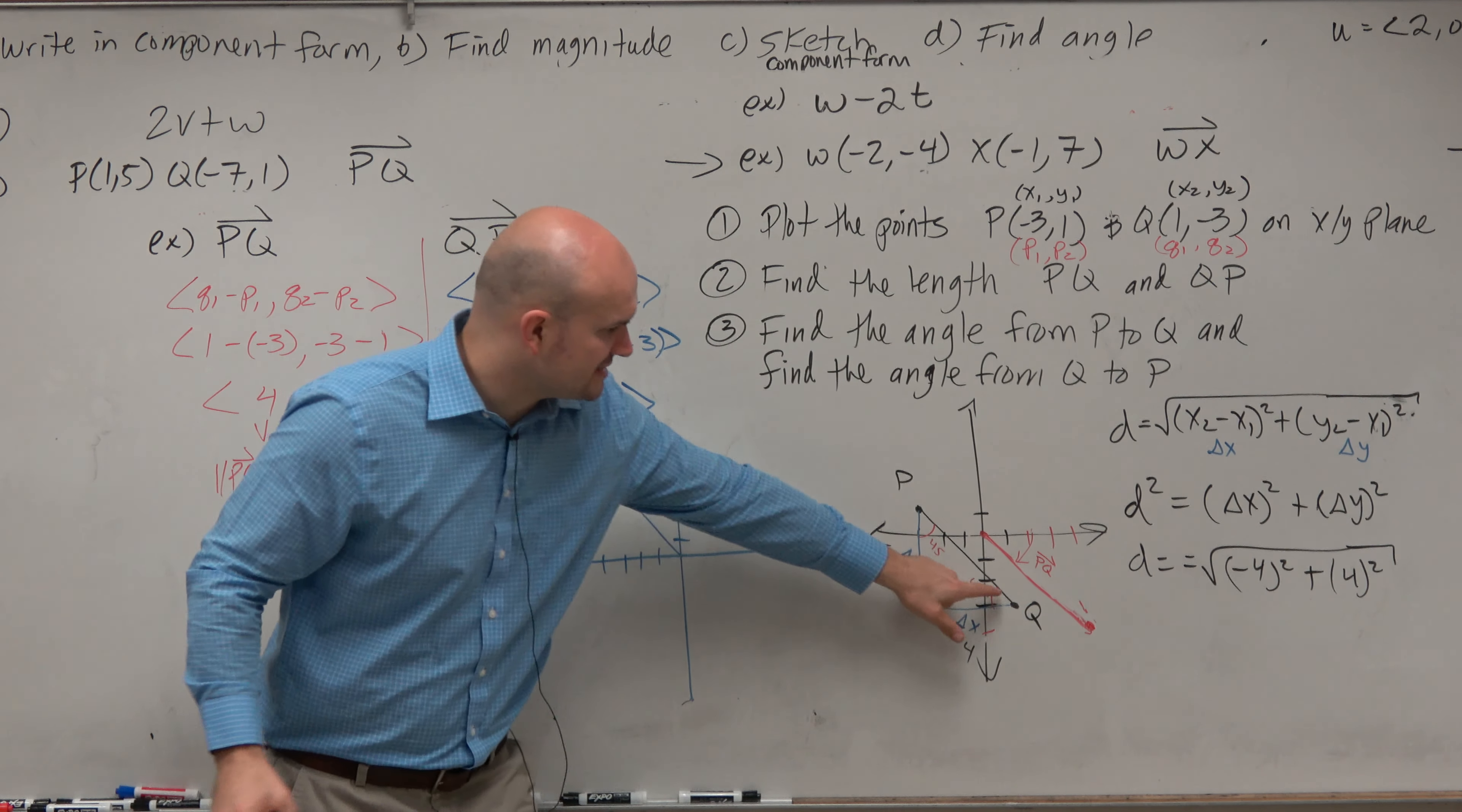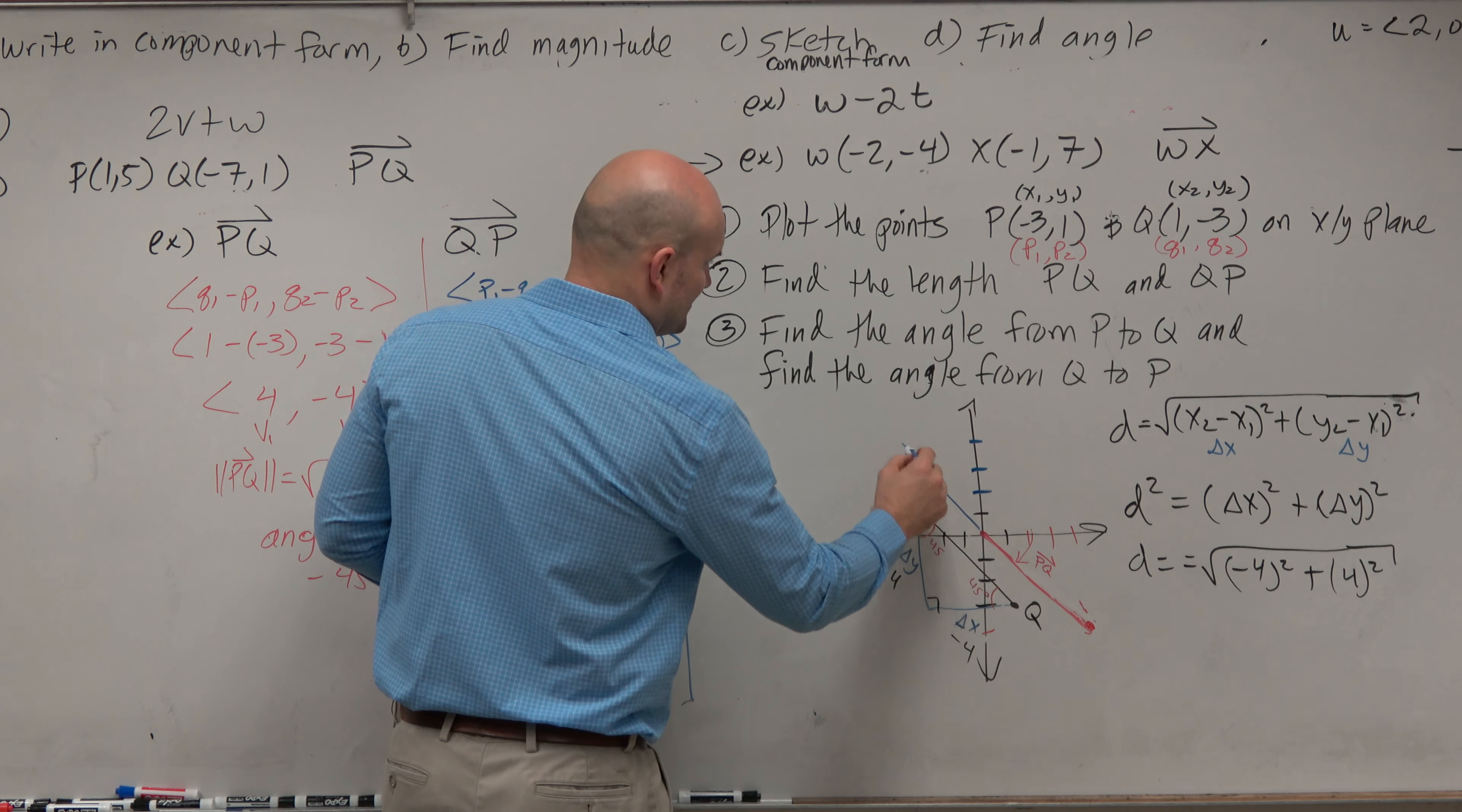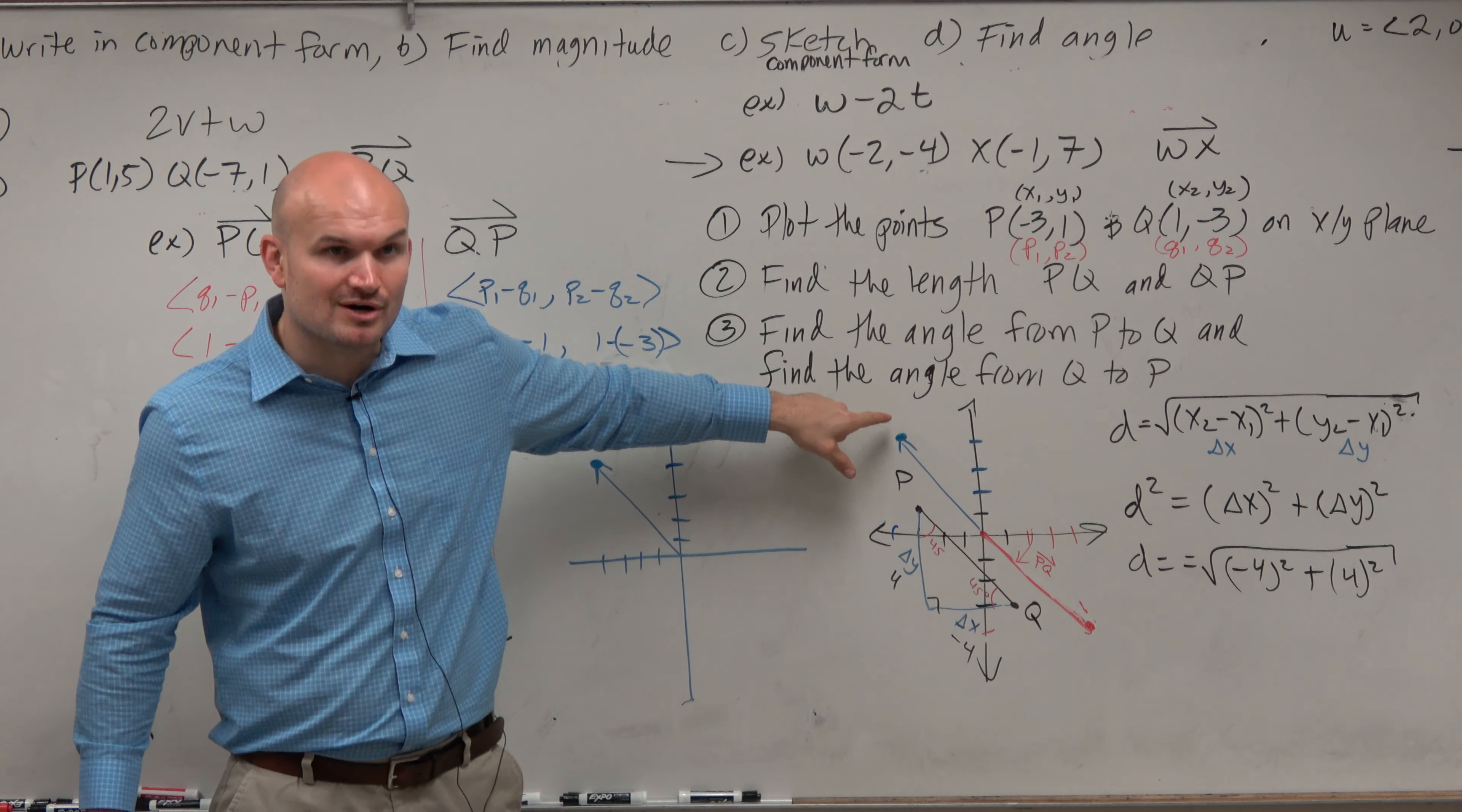Now, do you guys agree that's kind of like the same vector here? It's really just like this vector right there. Like it's just the same vector now in the opposite direction, right? And again, from q to p, doesn't that look like that works?